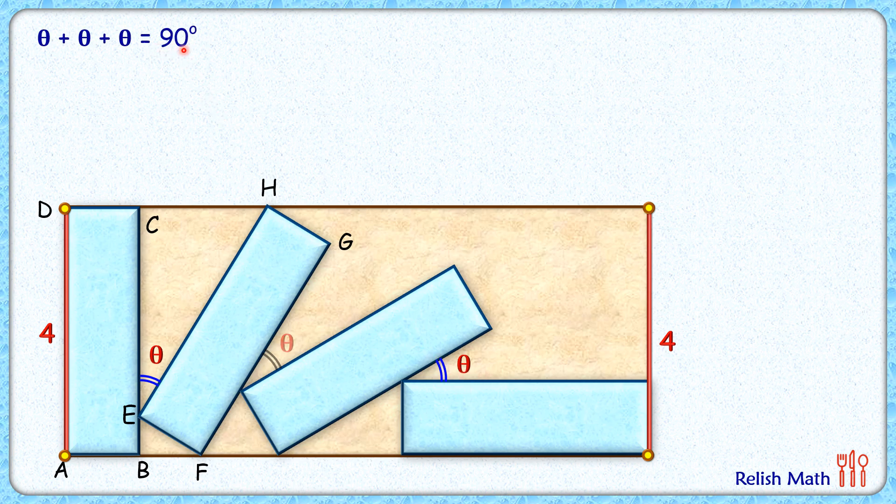Now let's join this diagonal length CA, and let's assume this angle is x degrees. Also, let's draw this diagonal HF. Here the angle between the long side and diagonal is x degrees, so this angle is the same x degrees here.